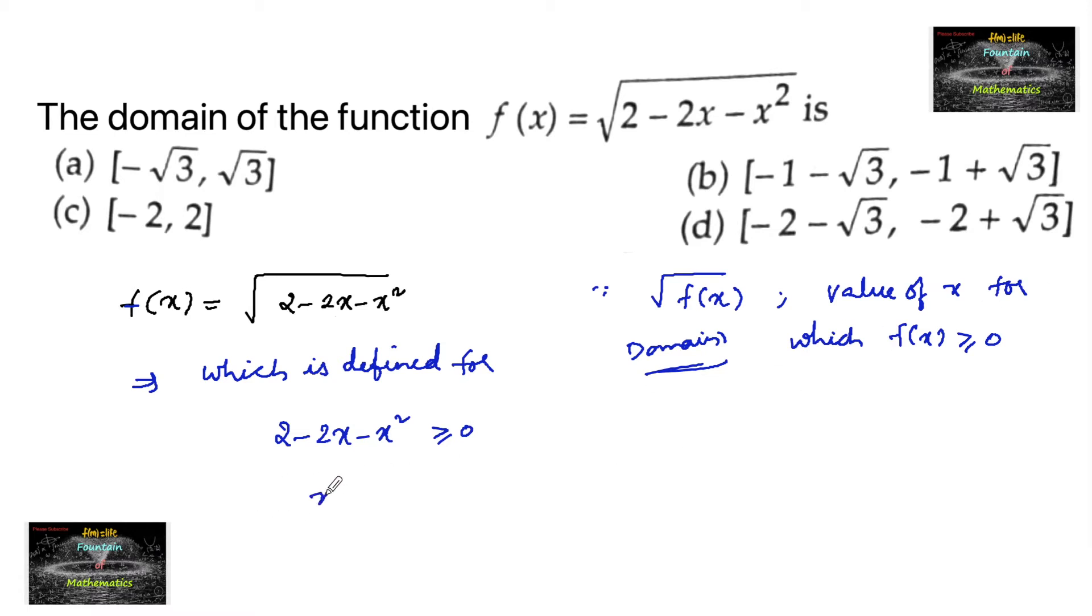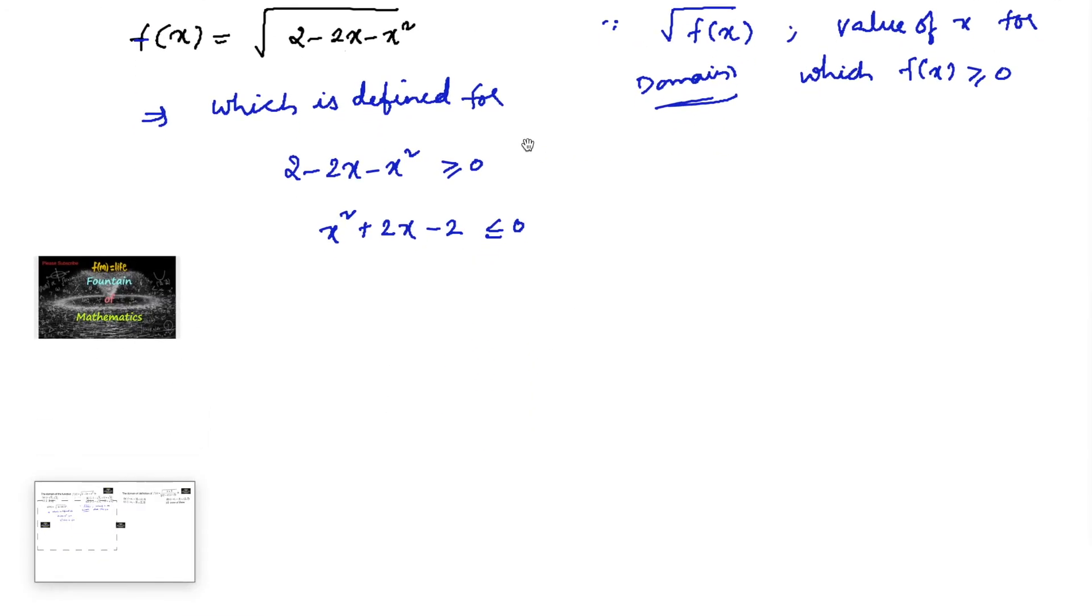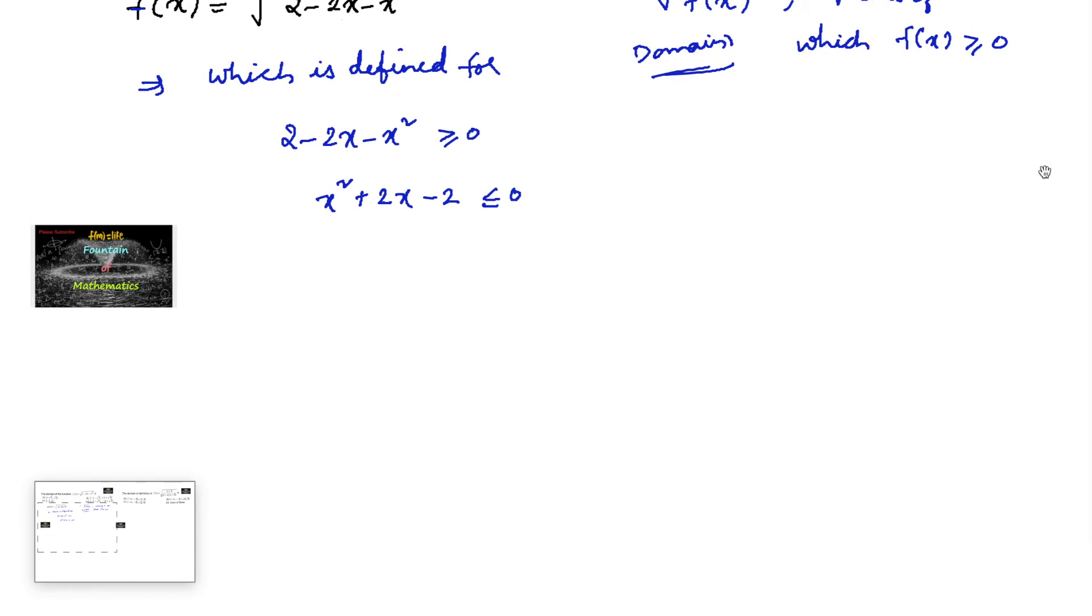That implies we can also write x² plus 2x minus 2 is less than or equals to 0. x² plus 2x minus 2, we can write it as x² plus 2 into x plus 1 and minus 1 minus 2 is less than or equals to 0. Just add and subtract 1.